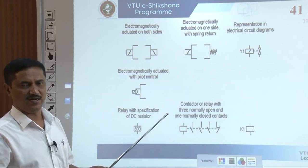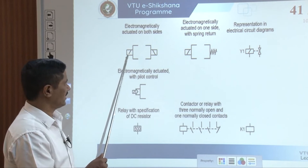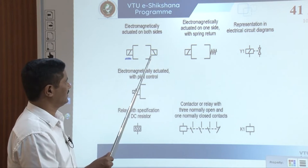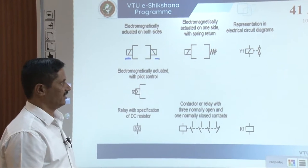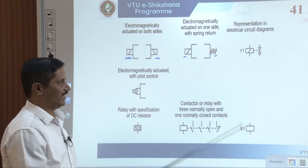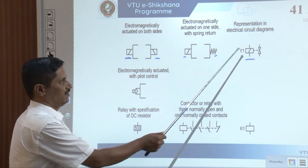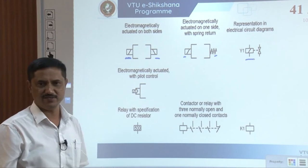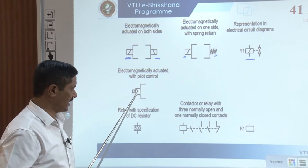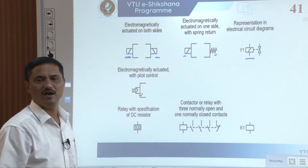Some valves can be electromagnetically actuated on both sides. In such cases the symbol will be different — you will have solenoids on both sides. If you have a solenoid on one side only, it is a single solenoid and spring return type. The symbol shown on the drawing sheet uses Y to represent the solenoid, so Y1 is the solenoid label. If a triangular symbol is present, we call it a pilot-assisted or pilot-controlled type of solenoid valve.